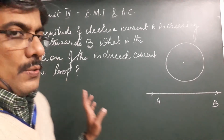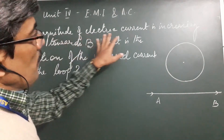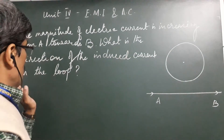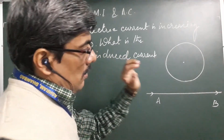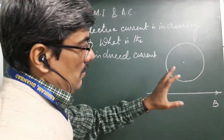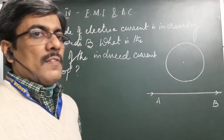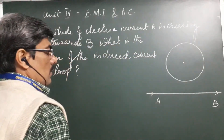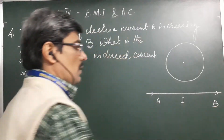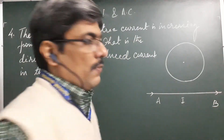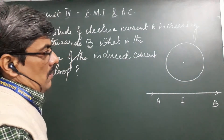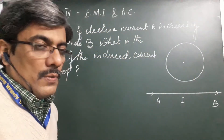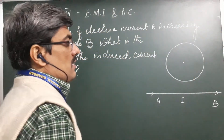The next question today: the magnitude of electric current is increasing from A towards B. What is the direction of the induced current in the loop? It's a similar question. There is a closed loop and a straight current-carrying wire. The current in the wire is increasing from A to B, that means it's flowing left to right. What should be the direction of the induced current in the loop — clockwise or anticlockwise?